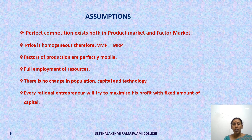The assumptions of the marginal productivity theory of distribution are: perfect competition exists both in the product market and the factor market; every unit of output is homogeneous, easily substitutable, and price is uniform, so VMP equals MRP; factors of production are perfectly mobile; there exists full employment of resources; there is no change in population, capital, or technology; and every rational entrepreneur will try to maximize his profit with a fixed amount of capital.